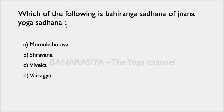Which of the following is the bahirang sadhna of Gyan Yoga? The word 'bahirang' means related to the outer world — outward. In Gyan Yoga, the three main components are Shravana (listening), Manana (contemplation), and Nididhyasana (meditation). Of these, Manana and Nididhyasana are antarang sadhna, while Shravana is bahirang sadhna because you are listening to someone from outside. Some may wonder about Viveka and Vairagya, but these are not considered part of Gyan Yoga sadhna.